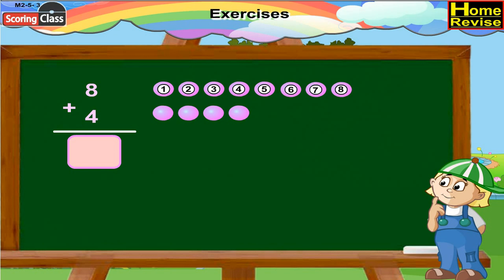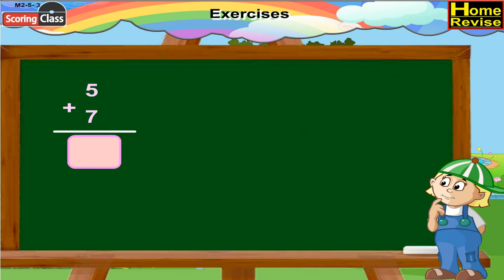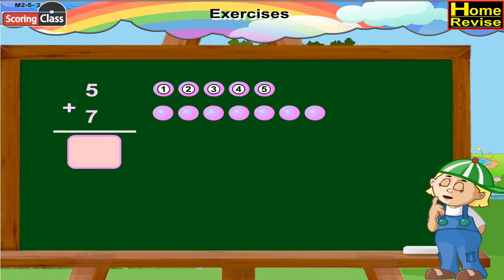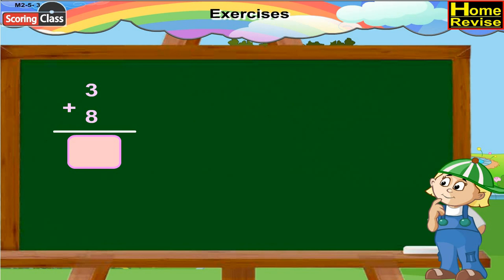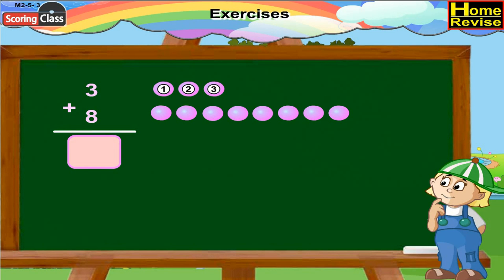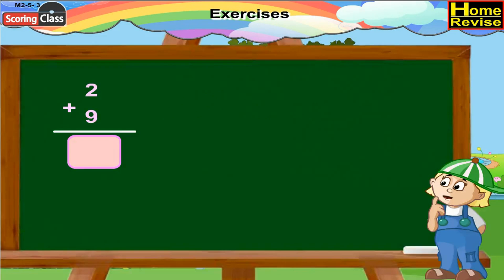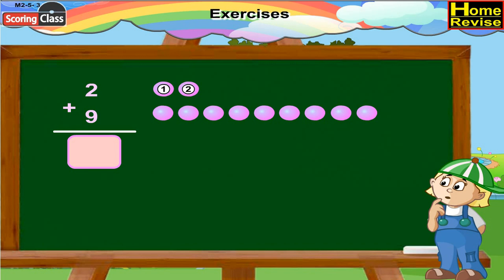8 plus 4. Now 8 plus 4 is 12. 5 plus 7. 5 plus 7 is 12 — you are right. 3 plus 8 is 11. 2 plus 9 is 11.